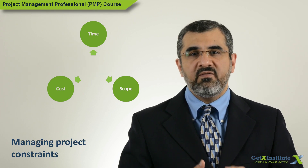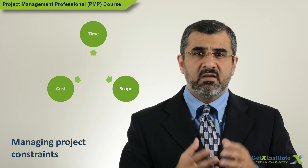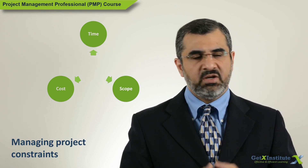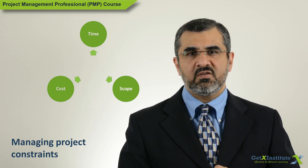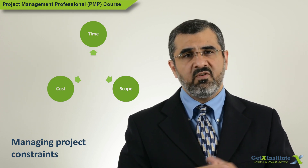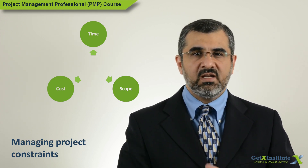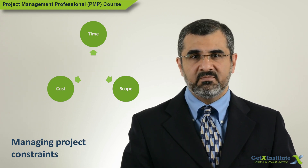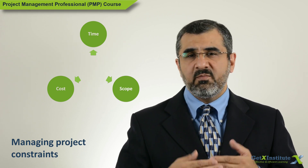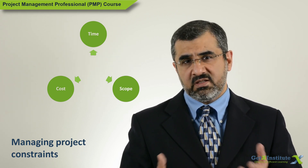Take an example. A project has committed to deliver certain scope for some money and within certain time. The client asks the team to add some extra work, and the project manager accepts, saying: we will add this work to the scope but deliver with the same money and within the same time as before. If you are the client, will you be happy? No, you should be upset. How can the project team deliver more scope within the same time and with the same money?